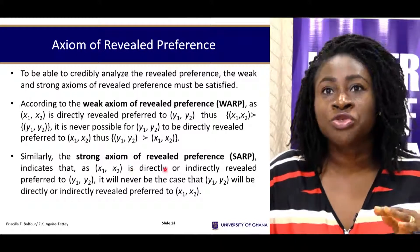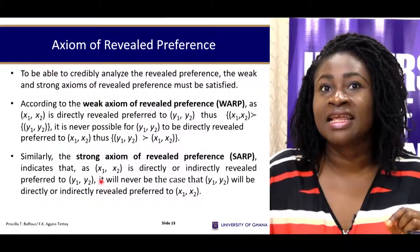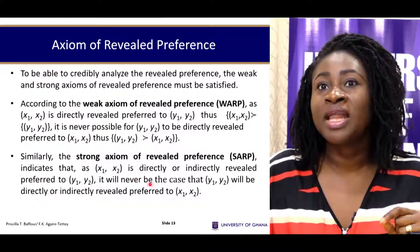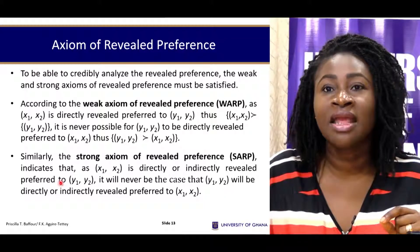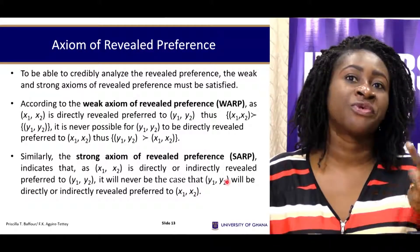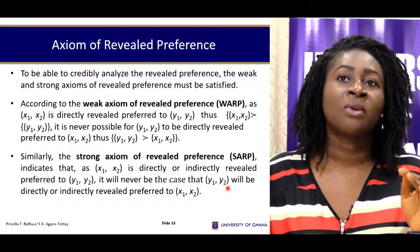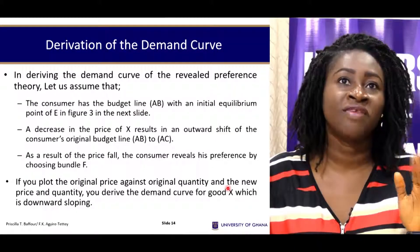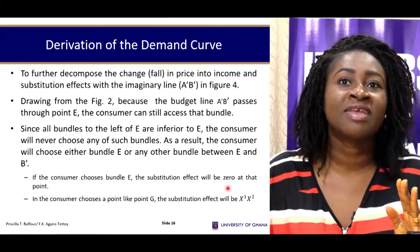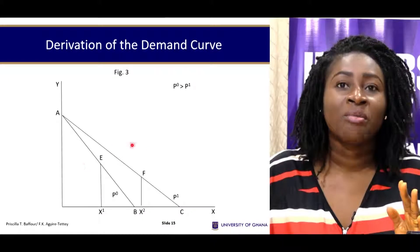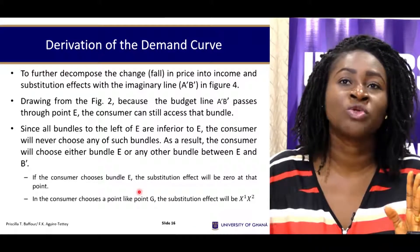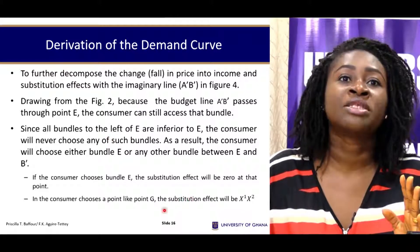Similarly, the strong axiom of revealed preference states that if (X1, X2) is directly or indirectly revealed preferred to (Y1, Y2), it will never be the case that (Y1, Y2) is directly or indirectly revealed preferred to (X1, X2). We are stating the condition more strongly — under no circumstance would the consumer change his or her mind in revealing preference of one bundle over the other.